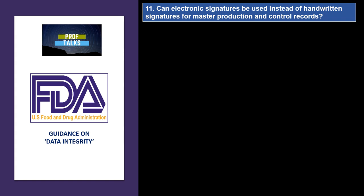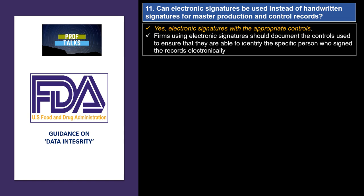Can electronic signatures be used instead of handwritten signatures for master production and control records? The answer is yes. Electronic signatures with appropriate controls can be used, but firms using electronic signatures should document the controls used to ensure they are able to identify the specific person who has signed the record.